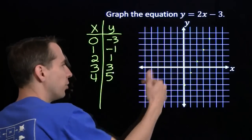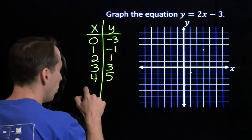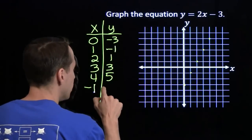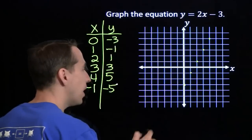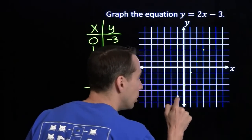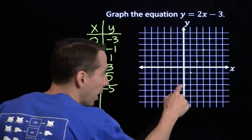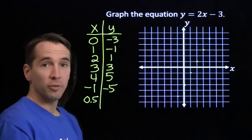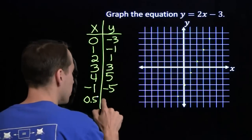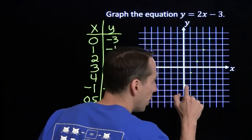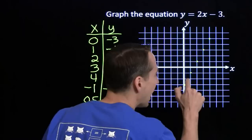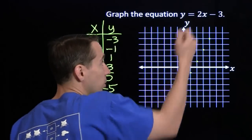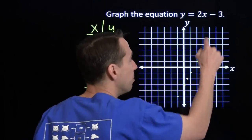What happens when we go the other direction? If we go left by 1, what's going to happen? If I put negative 1 in there, 2 times negative 1 is negative 2, and negative 2 minus 3 is negative 5 — left 1, down 2. What if I step up by a half instead? Put in 0.5 — 2 times 0.5 is 1, 1 minus 3 is negative 2. I go to the right by 0.5, I go up by 1. No matter how much I increase x, I'm going to multiply that increase by 2, so y is going to increase by double that amount.